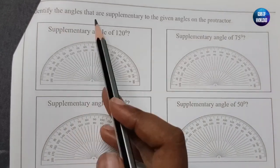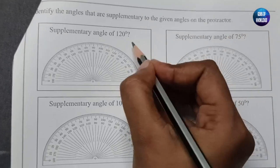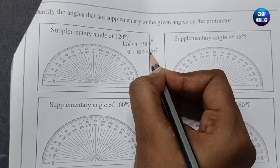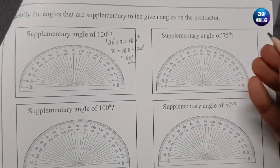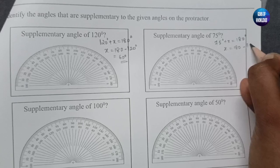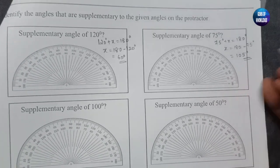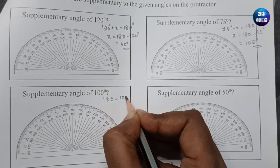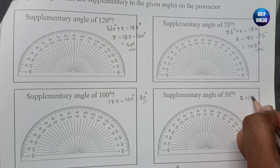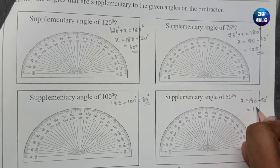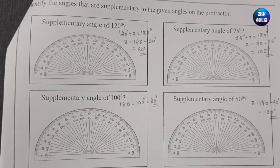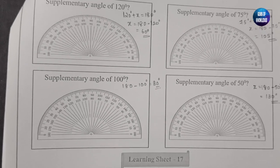Identify the supplementary angles from the protractor. For 120°: 120 + x = 180°, so x = 60°. For 75°: 180 − 75 = 105°. For 100°: 180 − 100 = 80°. For 50°: 180 − 50 = 130°. This was Learning Sheet number 16. I hope everything is clear — if you have any doubts, comment below. I'll be back with Learning Sheet 17, so stay tuned and stay connected. Thank you.